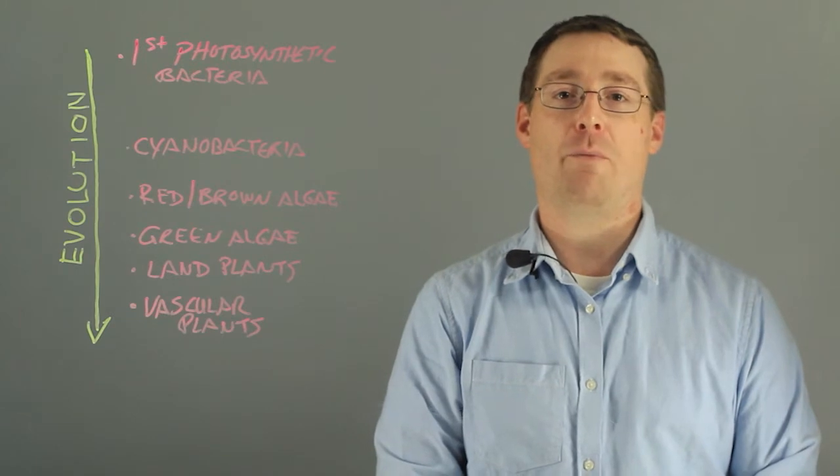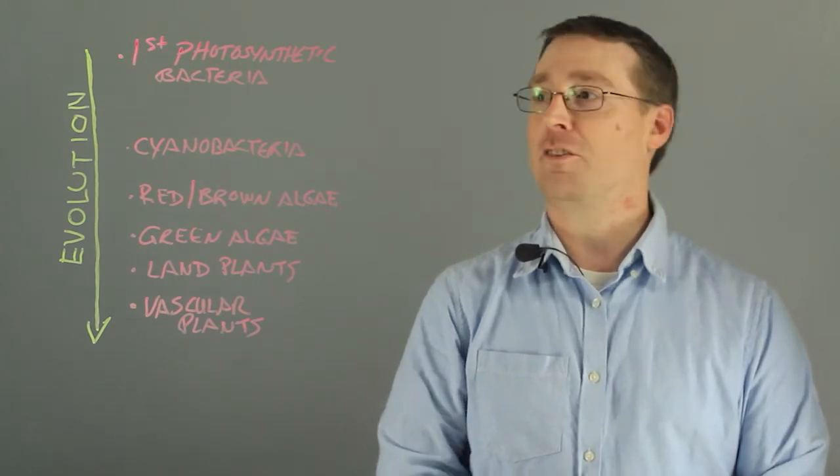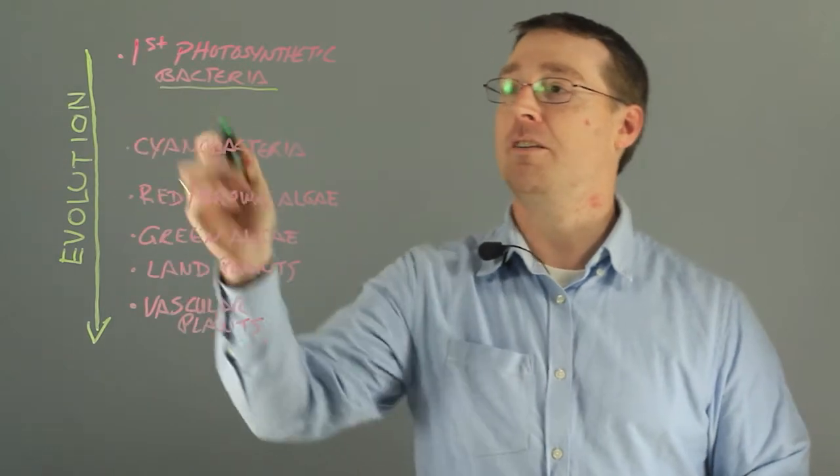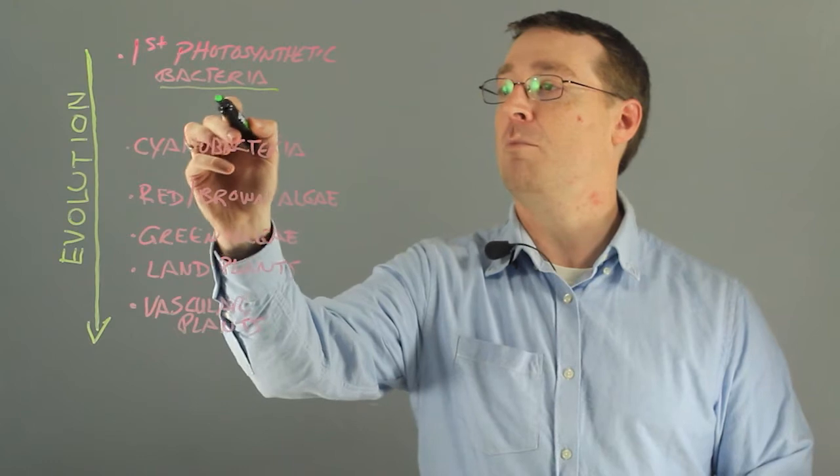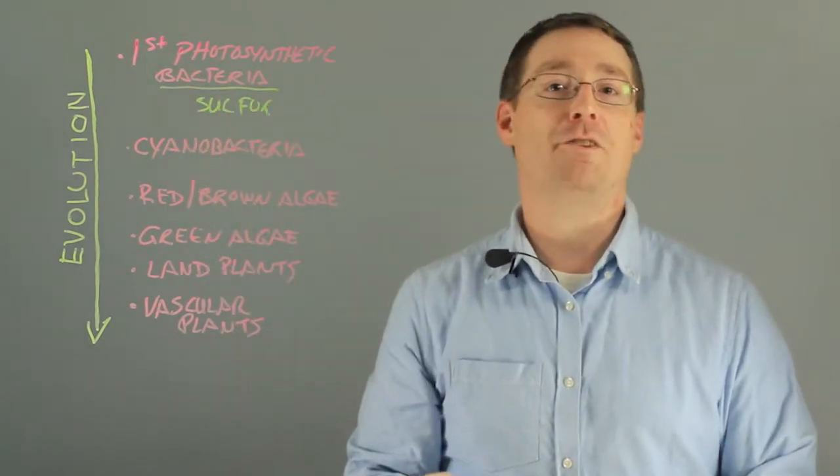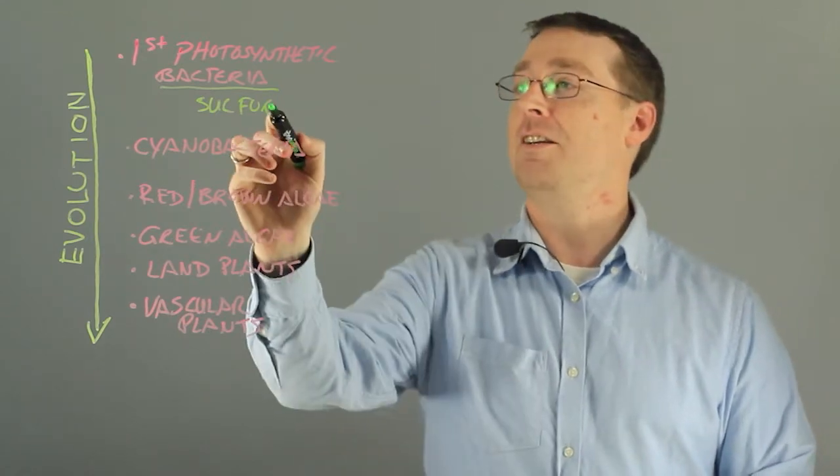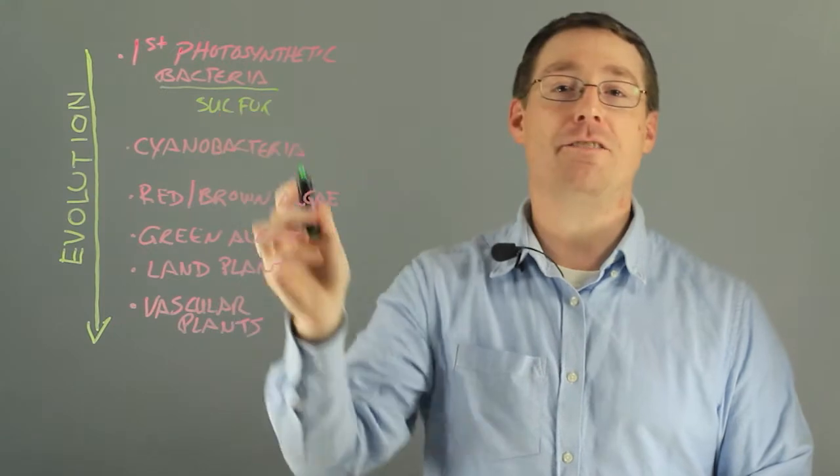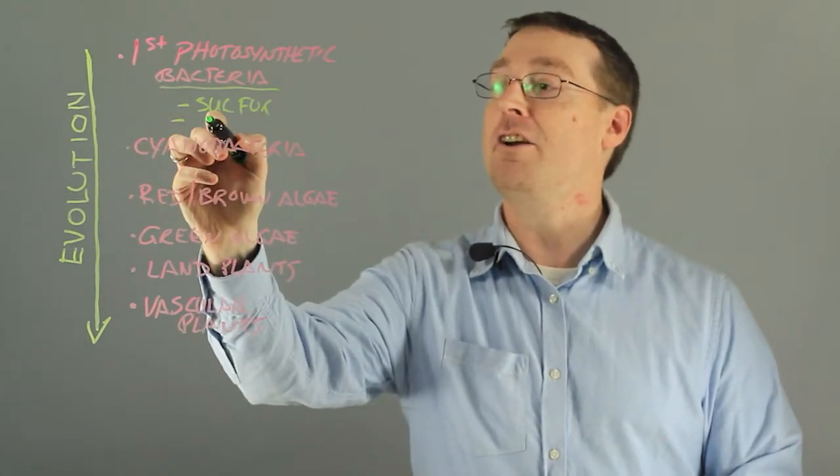However, if we go back 2 billion years or so, the first photosynthetic bacteria did not release oxygen into the air but that of sulfur, because the atmosphere was not rich in oxygen at all. These bacteria did not even use visible light but rather near infrared.